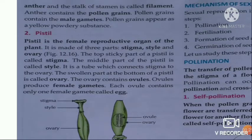Next is the pistil. The pistil is the female reproductive organ of the plant, and it has three parts: stigma, style, and ovary. The stigma is the top, sticky part.